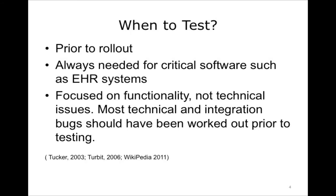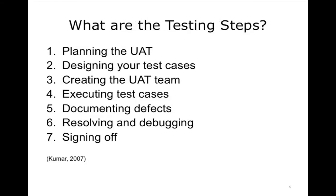Since the focus of user acceptance is on the system's functionality, the vendor should have rectified a majority of the technical glitches in the product prior to UAT testing. This is equivalent to a manufacturer doing product testing after a part comes off the assembly line to ensure the product functions to its specifications. User acceptance testing should be carried out in a test environment that mimics, as closely as possible, the actual work environment where the EHR will be installed. In general, there are seven steps when performing user acceptance testing.